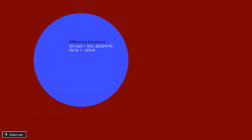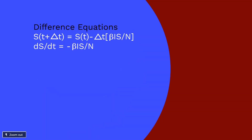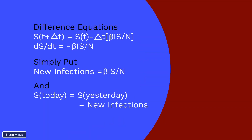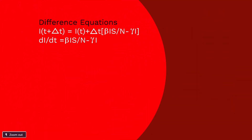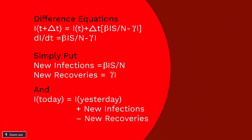Now comes the mathematics part. The difference equation for susceptibles: new infections equals the infection rate beta multiplied by the infected I, multiplied by the proportion of susceptibles S by N. Susceptibles equals susceptibles yesterday minus new infections. The infected difference equation involves new infections and new recoveries. New recoveries equals recovery rate gamma multiplied by infected I, and infected equals infected yesterday plus new infections minus new recoveries.